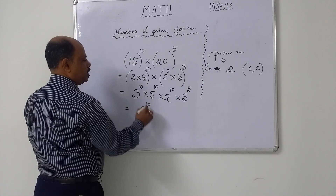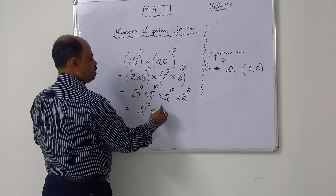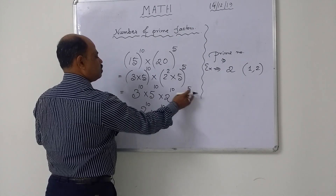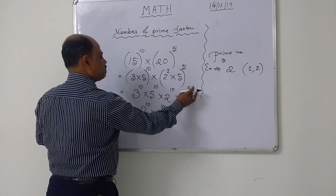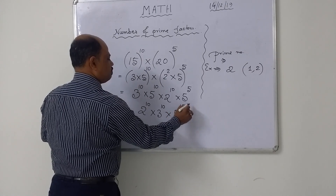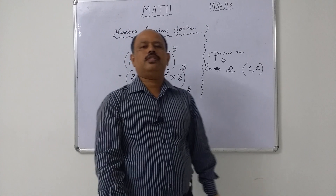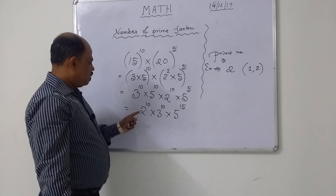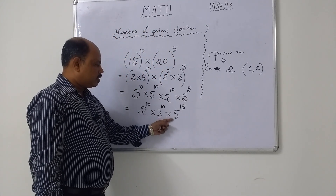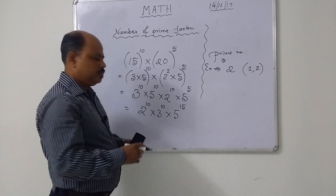Then it becomes 2 to the power 10, 3 to the power 10, and 5 to the power — 10 plus 5 — that is 5 to the power 15. Check the expression again: all base numbers are prime. Yes.